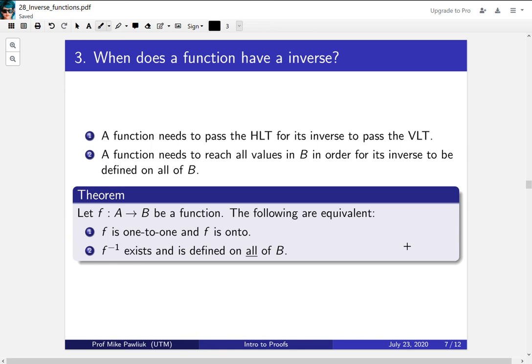So together we get the following theorem. If f is a function from A to B, then being a bijection is equivalent to the inverse exists and is defined on all of B. And in fact these properties line up. The inverse existing is equivalent to one-to-one, and being onto is equivalent to being defined on all of B. The takeaway from this theorem is that inverses exist for bijections.